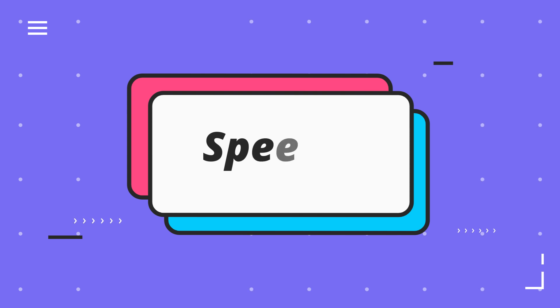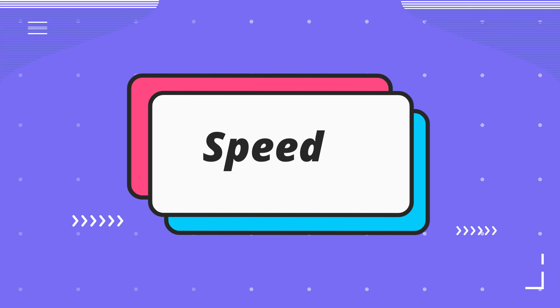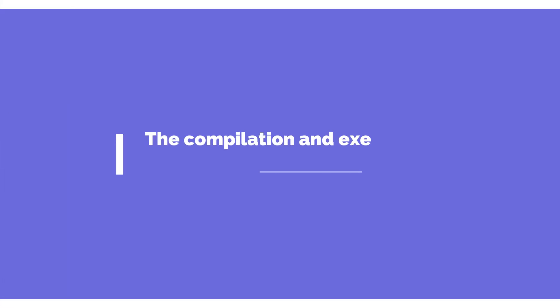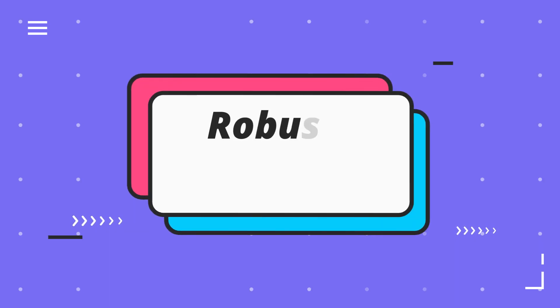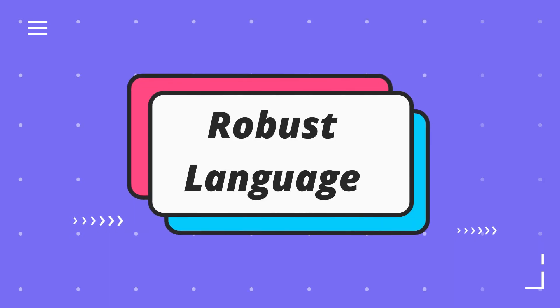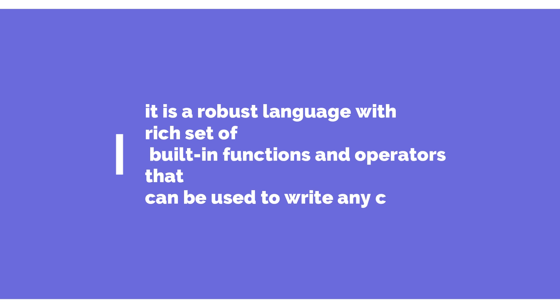Third, speed. The compilation and execution time of C language is fast since there are fewer inbuilt functions and hence less overhead. Fourth, it is a robust language with a rich set of built-in functions and operators that can be used to write any complex problem.